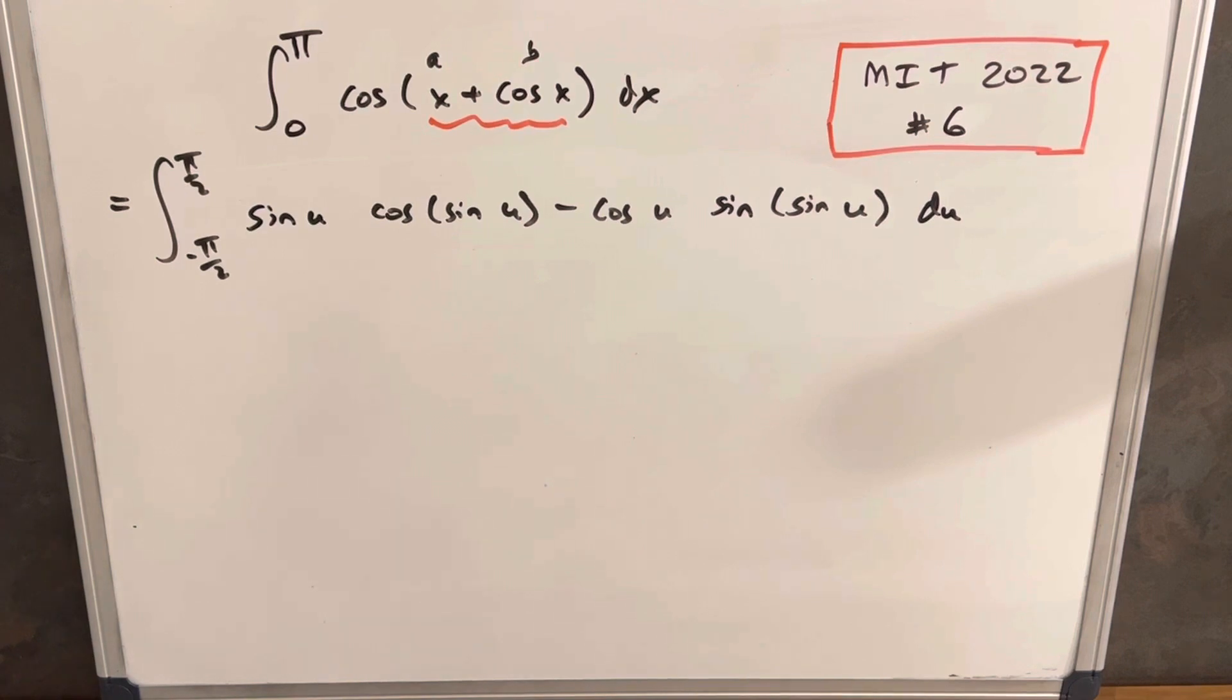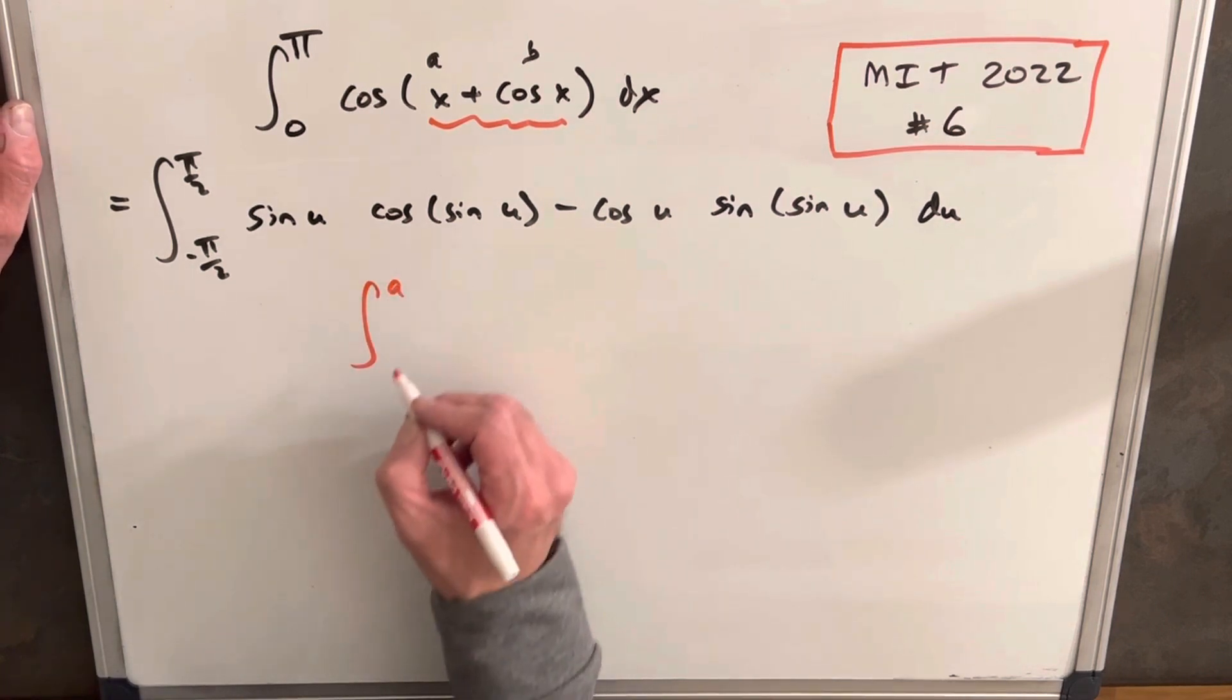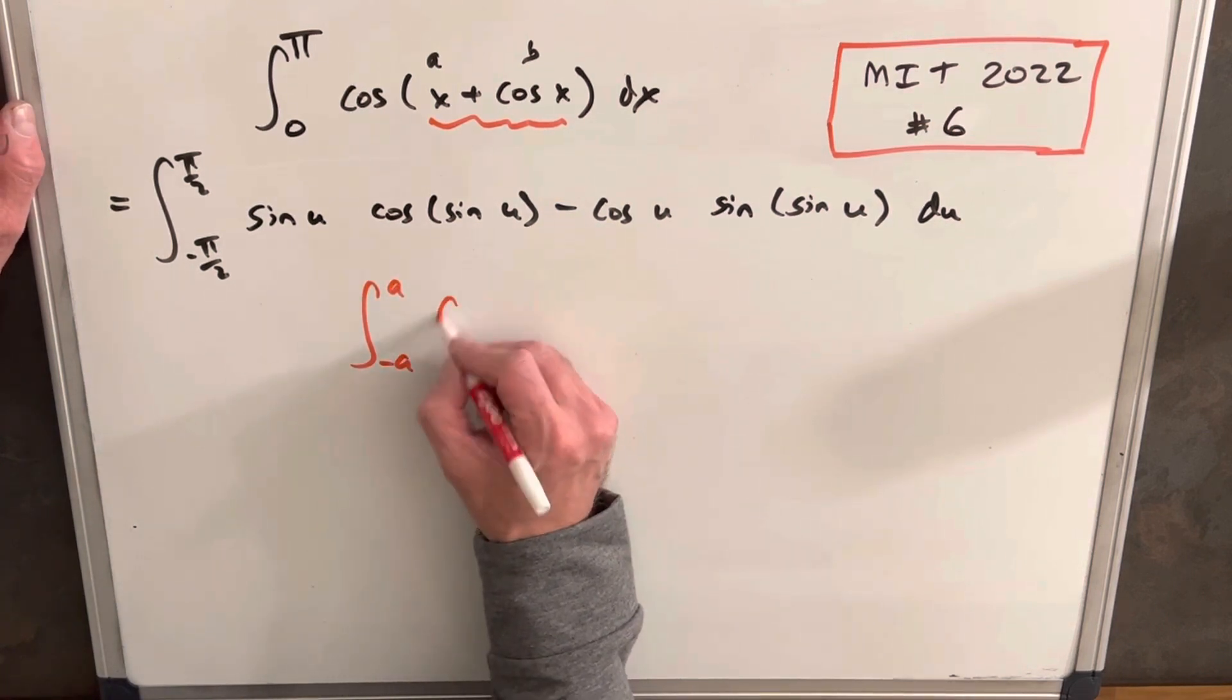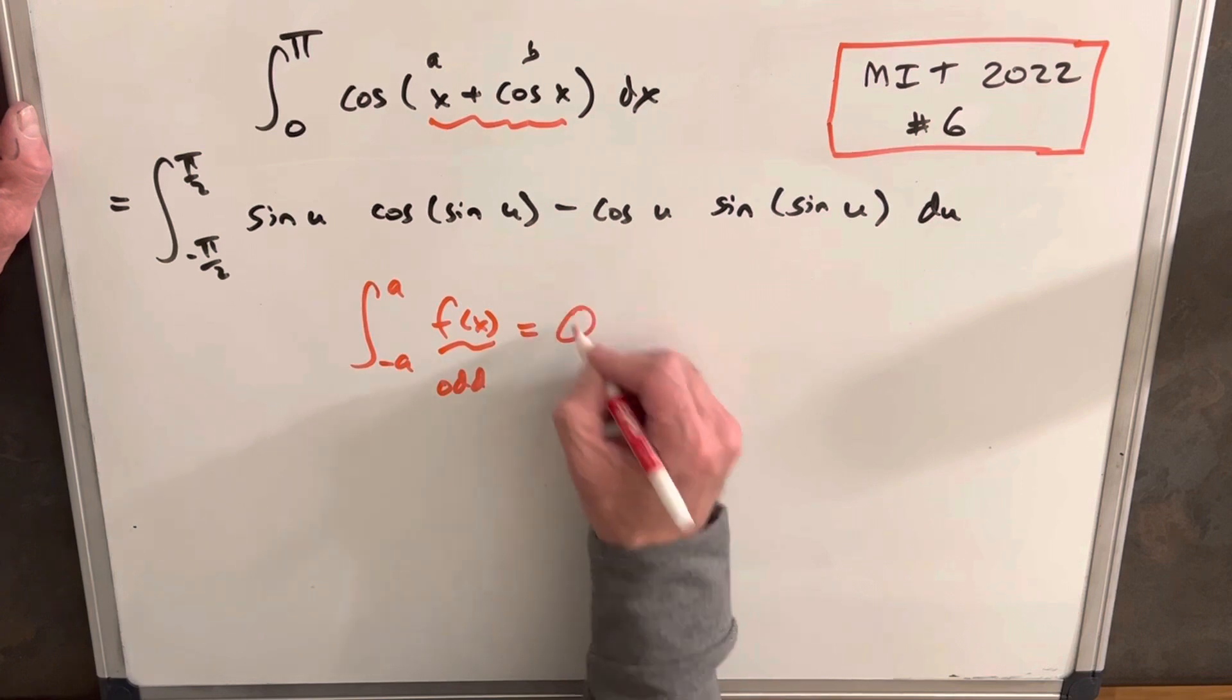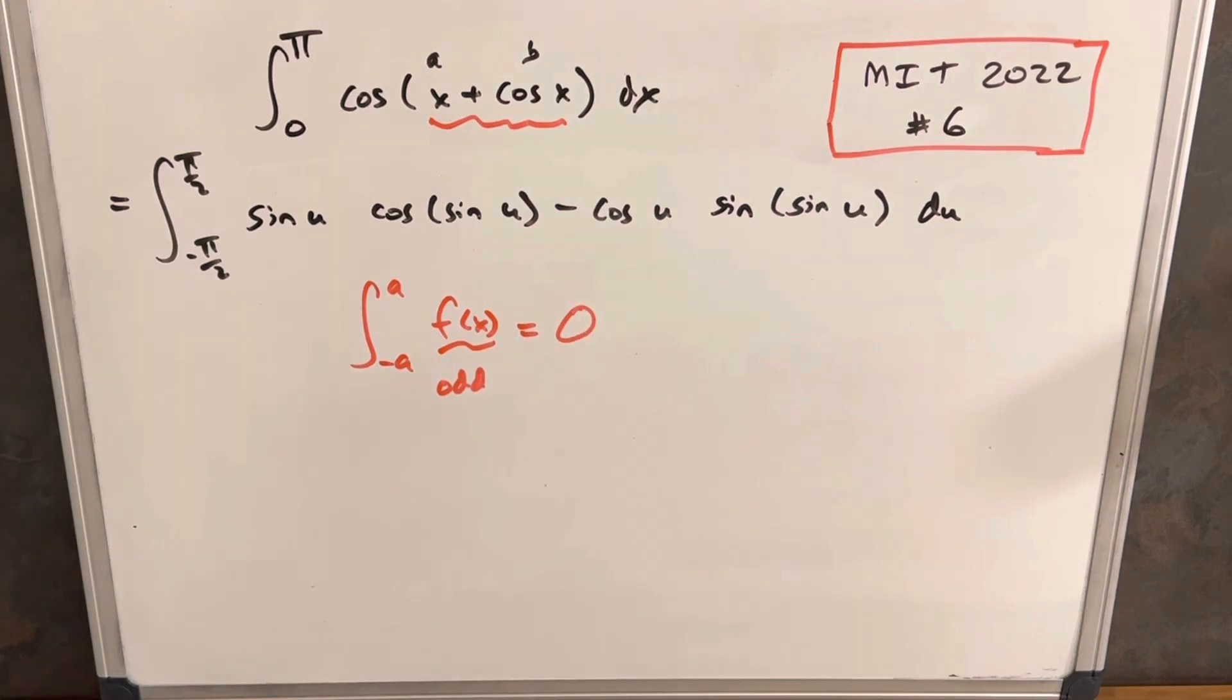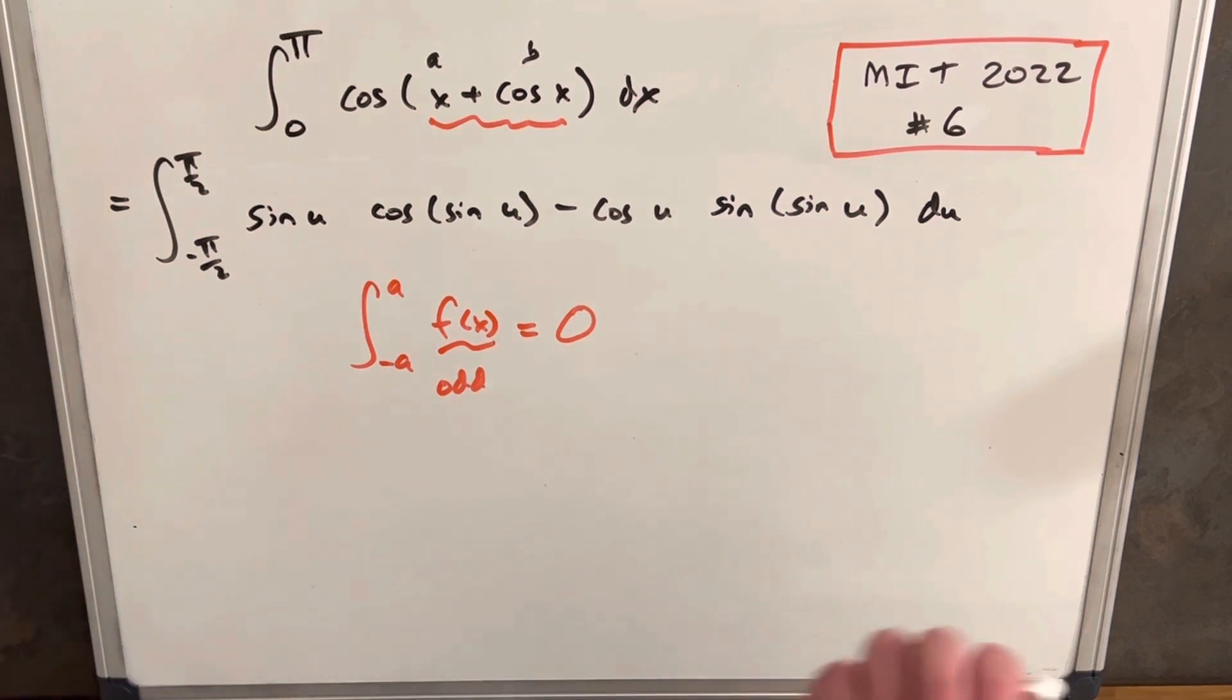So given we still don't know how to integrate this, we do have a very useful property here. Let's go over that real quick. We have this property: if we have an integral from a to negative a of f of x, and if f of x is an odd function, this whole thing is going to be zero. So this is the great trick of these contest problems. If you can get it like this, there's no more work to do and the answer is just zero and you're done.